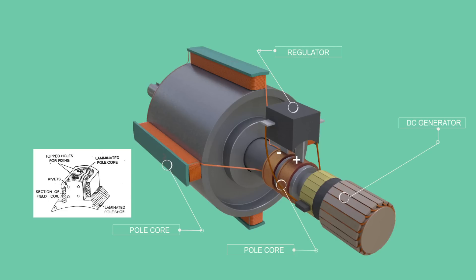This DC current is supplied either from an external source or from a small DC generator which is fitted on the same prime mover. Such alternators are called self-excited.